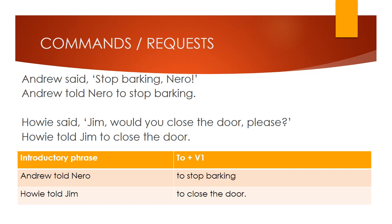Commands or requests. Andrew said 'Stop barking, Nero.' — reported as: Andrew told Nero to stop barking. Second example: Howie said 'Jim, would you close the door please?' — reported as: Howie told Jim to close the door. We can conclude there are two parts: the introductory phrase, and 'to + verb.' For example, 'Andrew told Nero' is the introductory phrase, and 'to stop barking' is the to-infinitive part. Example two: 'Howie told Jim' is the introductory phrase, and 'to close the door' is the to-infinitive part.